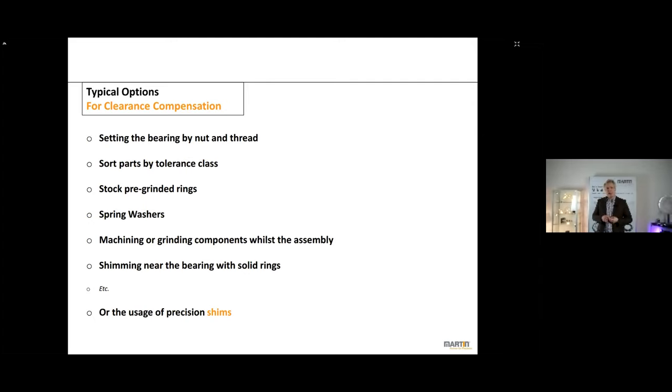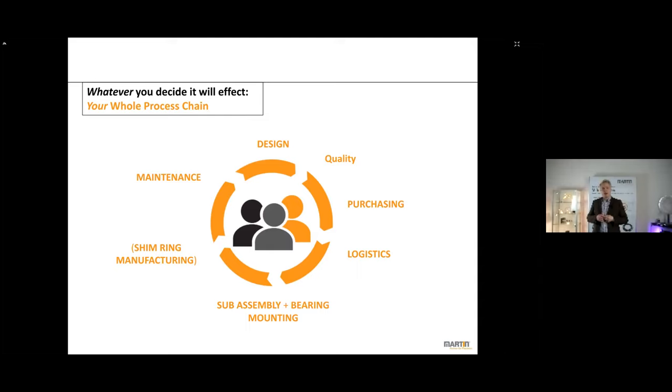In the next slide, I show you here now what we address with the process chain. The whole process chain starts from design, goes over to quality, purchasing, logistics, sub-assembly, bearing mounting, also maybe the manufacturing of shim rings and spacers. And then later on, we look into the field of maintenance.